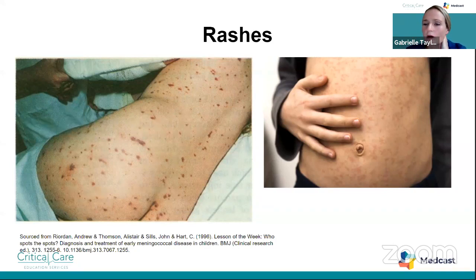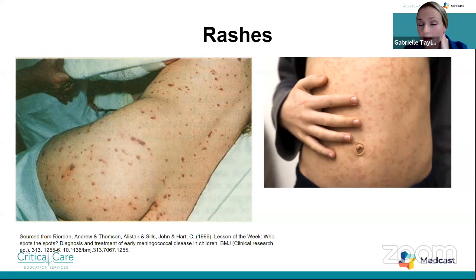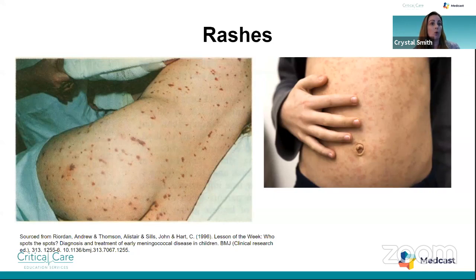A question about why the rash predominantly falls below the nipple line — the best guess is that the face and upper thorax are classified as the central circulatory system, so rashes to the lower extremities are probably more indicative of circulatory compromise. Also, when children vomit, they can get petechiae above the nipple line from the pressure changes — this burst little blood vessels around the eyes or skin. So a rash only from the nipple line up with a vomiting history is less concerning than widespread petechiae.